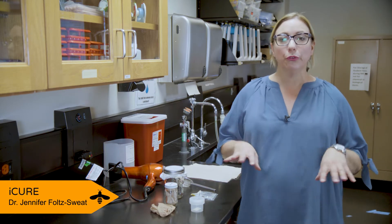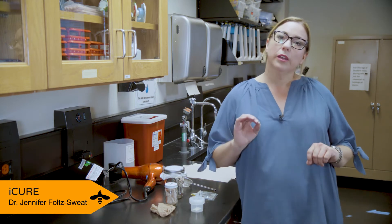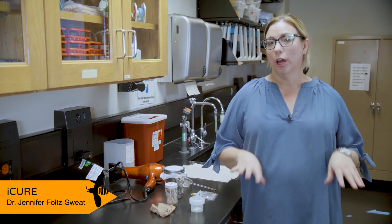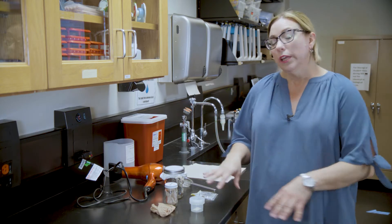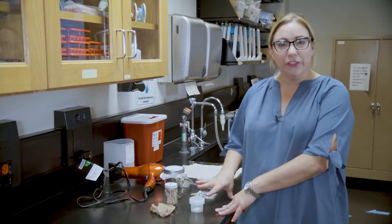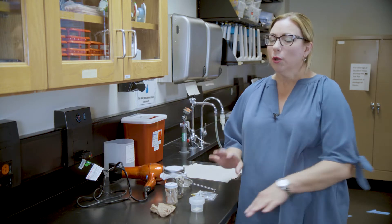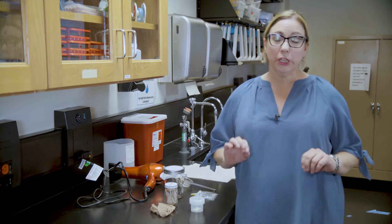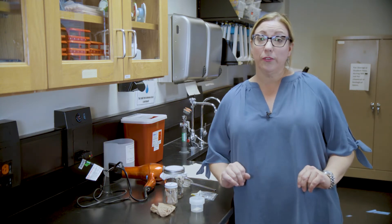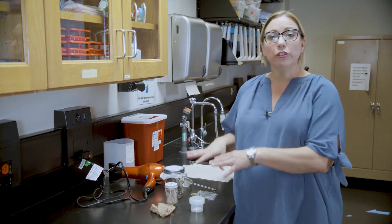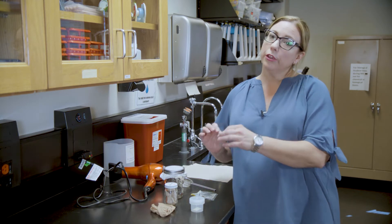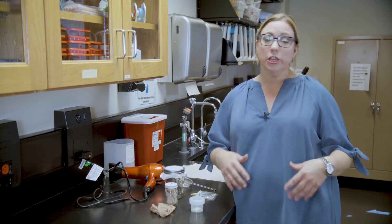I showed you how to do three sampling techniques: netting, pan trapping, and observational sampling. Now I have some bee specimens here that I obtained through netting and pan trapping. Remember, for observational sampling, you will not be collecting any specimens. I'm going to show you how to prepare your specimens for curation or mounting.